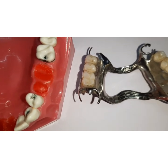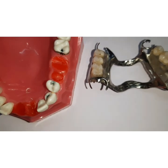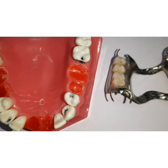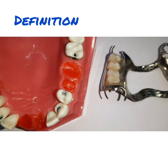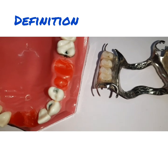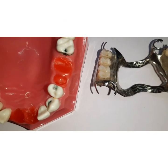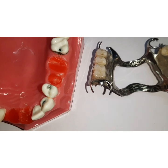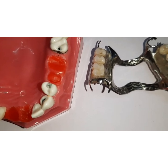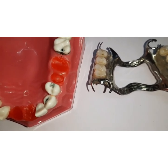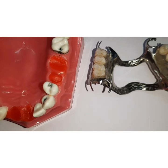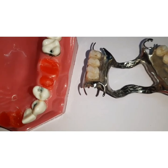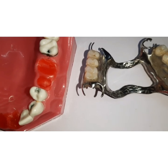By definition, a circumferential clasp or the acres clasp is defined as a retainer that encircles the tooth by more than 180 degrees, including opposite angles, and which generally contacts the tooth throughout the extent of the clasp, with at least one terminal located in the undercut area.